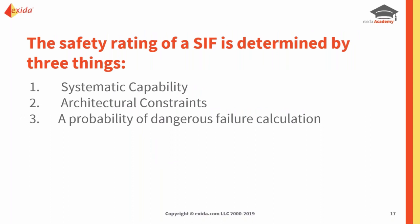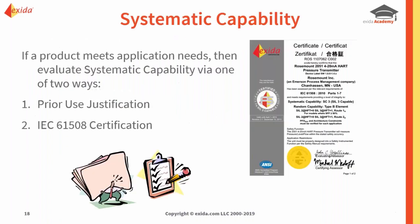There are different barriers that engineers face when they perform a SIF design. When an end user is choosing a device to incorporate into their SIF, there are three major barriers they must hurdle over to say the SIF is in compliance with IEC 61511 and to really achieve that SIL rating. The SIL level is determined by three things: the systematic capability rating, the architectural constraints for that element, and the PFD average calculation for that product.